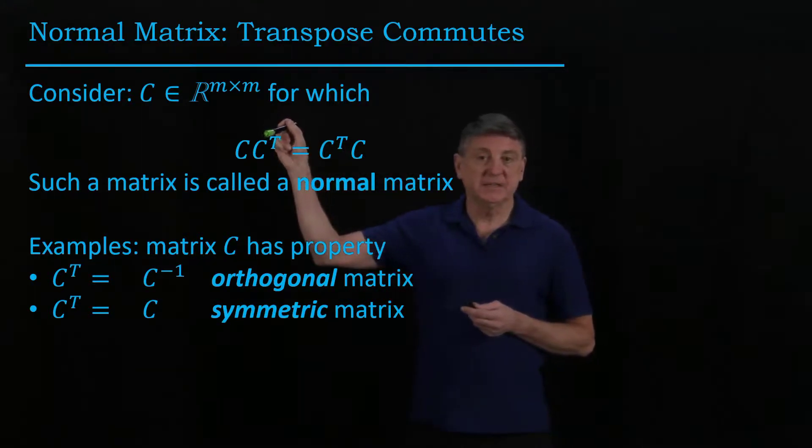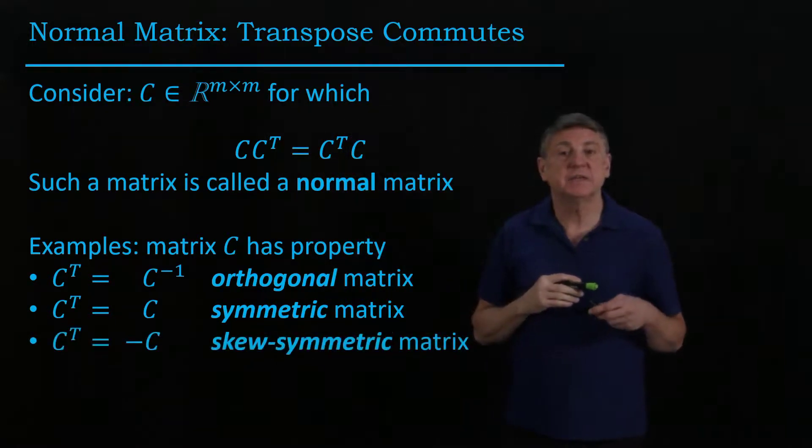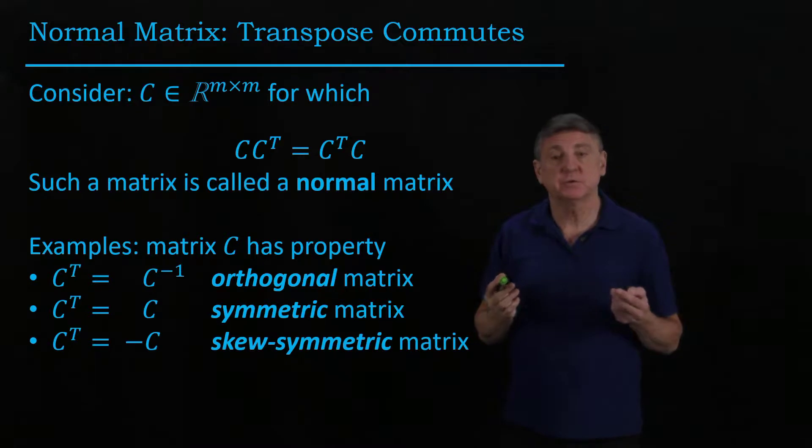Another possibility is that C transpose is minus C, in which case this product will be minus C times C, and this will be minus C times C, and that means that a skew-symmetric matrix commutes with its transpose.